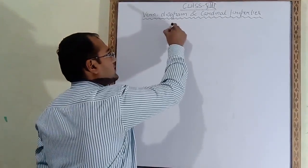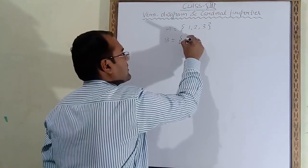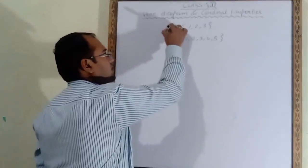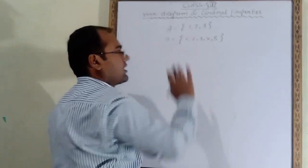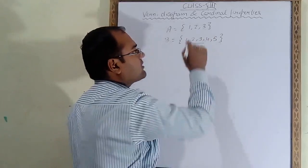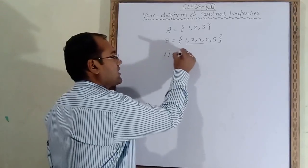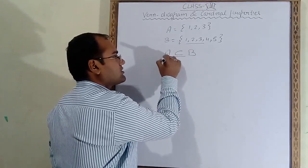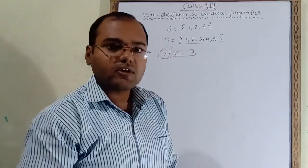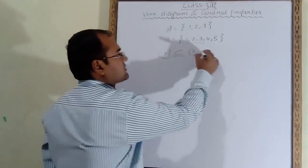Let's take one example. Suppose I have two sets A and B. Set A has elements 1, 2, 3 and set B has elements 1, 2, 3, 4, 5. We observe all the elements of A — 1, 2, and 3 — are coming in B. So we say A is a subset of B because A's elements are coming inside B.